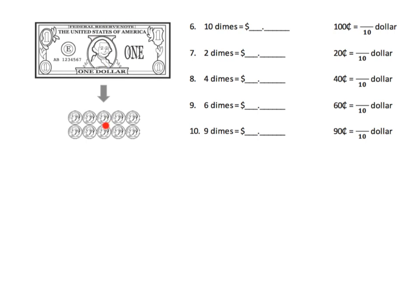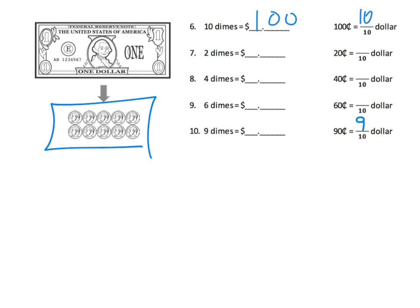Now we focus on the fact that a dollar equals 10 dimes. Of course 10 dimes is a hundred cents, so that's 10 tenths of a dollar — one whole dollar. Then if we go down to nine dimes, that's 90 cents — nine out of ten dimes.